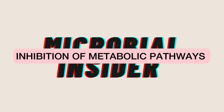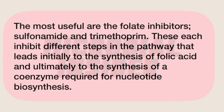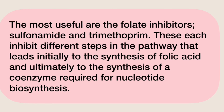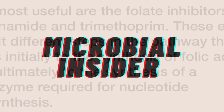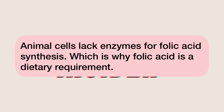Inhibition of metabolic pathways. The most useful are the folate inhibitors, which are sulfonamide and trimethoprim. These each inhibit different steps in the pathway that leads initially to the synthesis of folic acid and ultimately to the synthesis of a coenzyme required for nucleotide biosynthesis. Animal cells lack enzymes for folic acid synthesis, which is why folic acid is a dietary requirement.